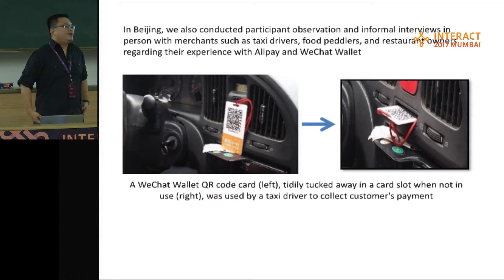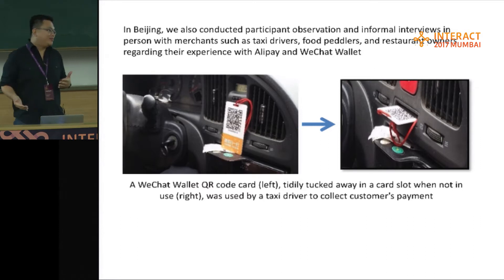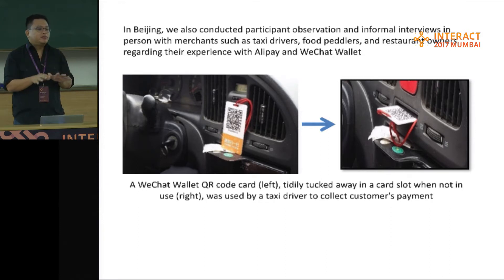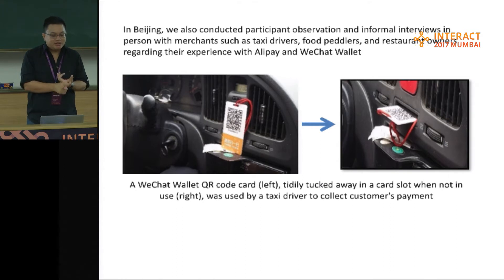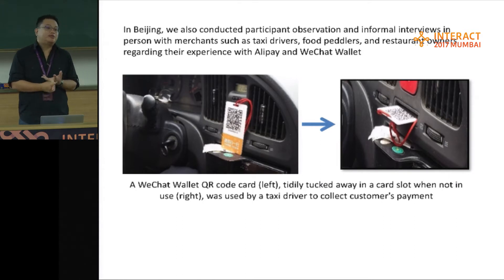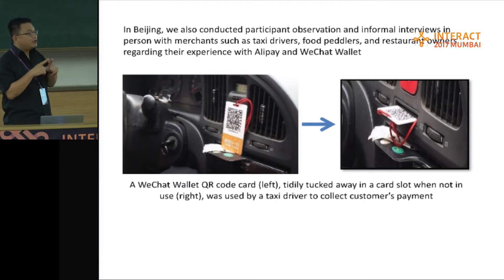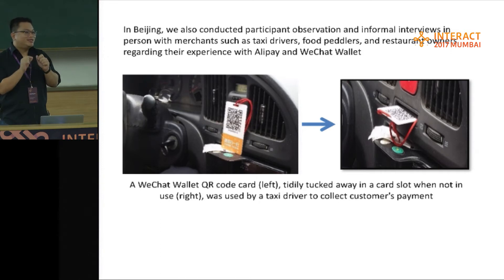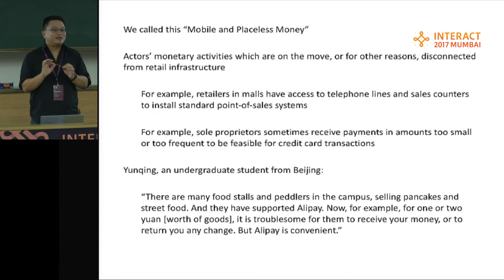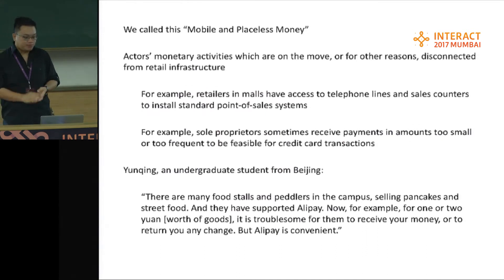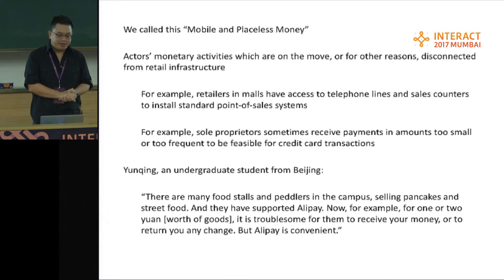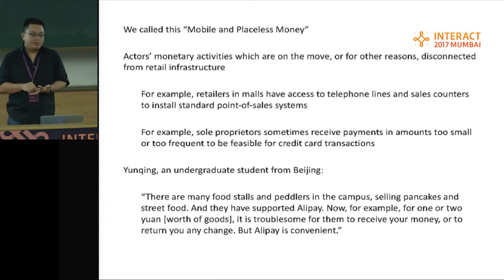It's very interesting — when we went to Beijing and left the airport on the way to the hotel, we really started noticing the high dominance of WeChat wallet and Alipay in the Chinese environment. All taxi drivers, food paddlers, and restaurant owners are using them. When we entered the taxi, the taxi driver had a QR code card that he would use to receive payment from customers — he can easily tuck it away in the taxi. It's not electronic; it's a physical QR code card. You can scan it to make payment. We call this form mobile and placeless money.